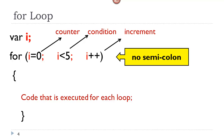We always start with a variable, and a lot of times programmers use the letter i. That var i can be declared outside of the for loop or it can be declared inside the parentheses. So here we have the for keyword followed by parentheses. We always start out with what is called the counter variable, and most commonly we initialize it to zero — so here we have i equals zero. Notice the semicolon.